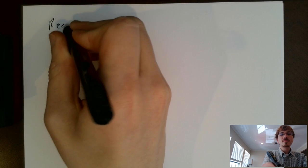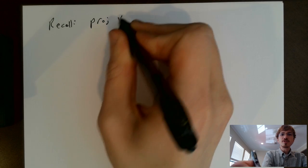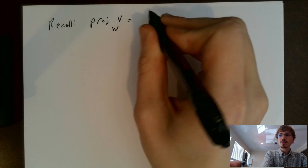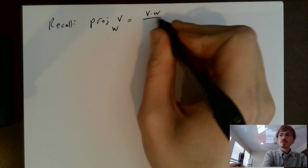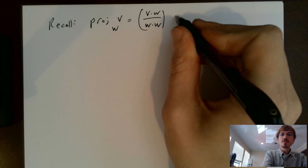Hi everyone. In this video we're going to talk about orthogonal projections, and namely we're going to extend the idea of orthogonal projections that we saw at the beginning of the course to what it means to orthogonally project a vector onto a subspace, not just a vector or a line spanned by a vector. So let's recall that the projection of some vector v onto another vector w is equal to v dot w divided by w dot w times the vector w.